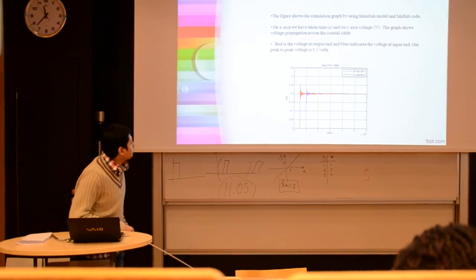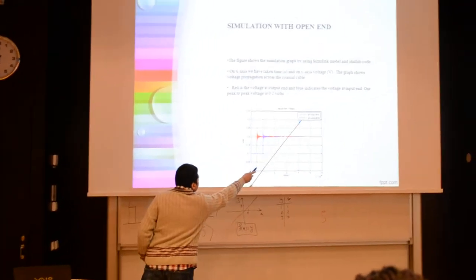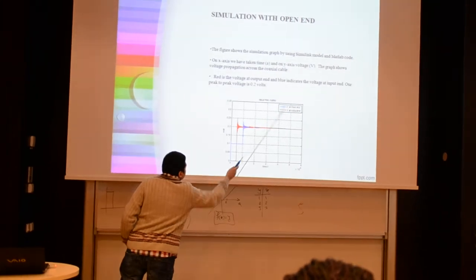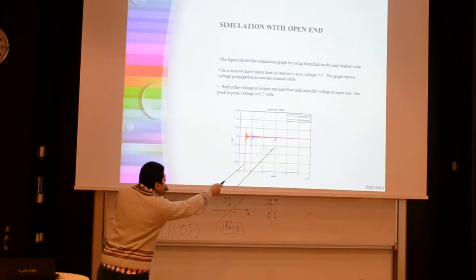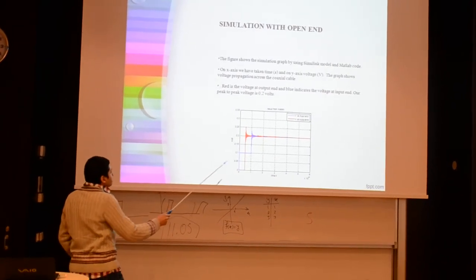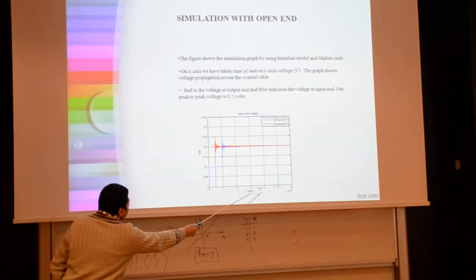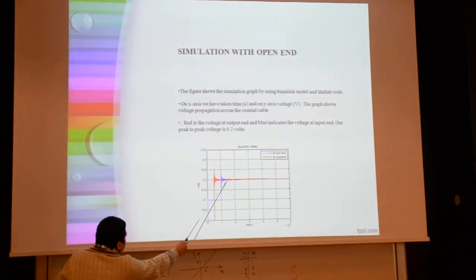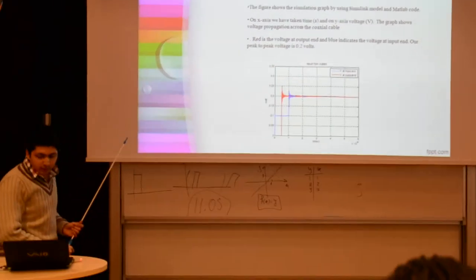As you can see, this blue represents the voltage at the input end and this red represents the voltage at the output end. And you can see the time is almost the same and the input is perfect 0.2 volts. So as we go forward.